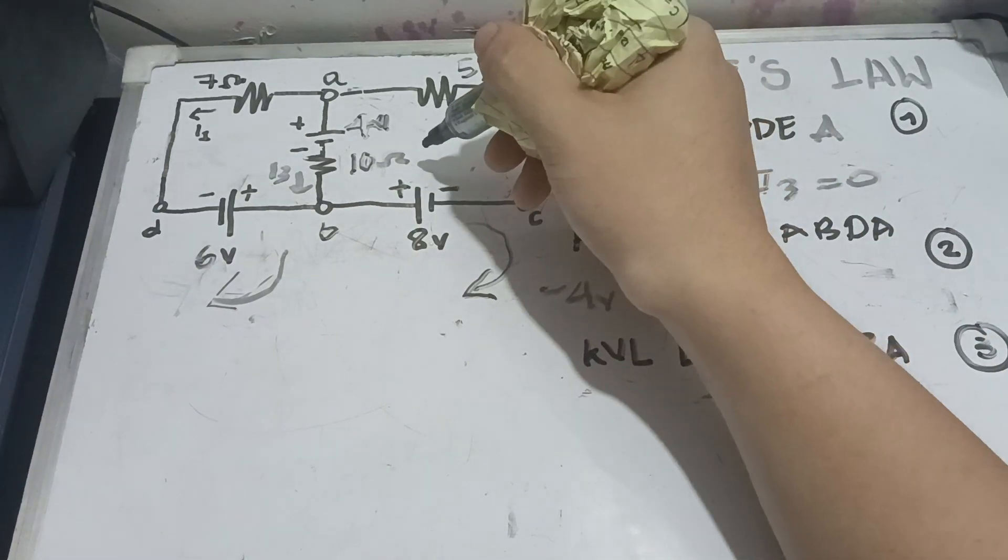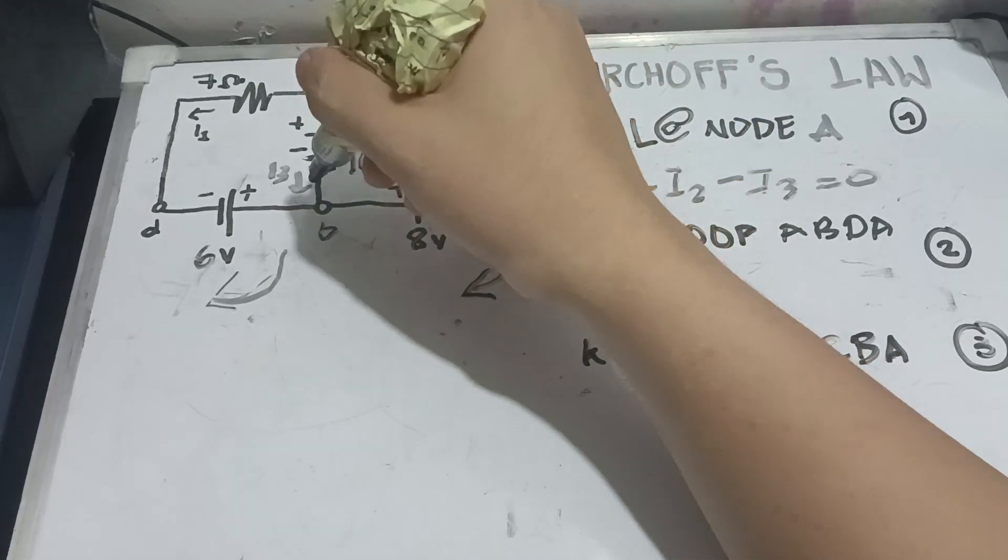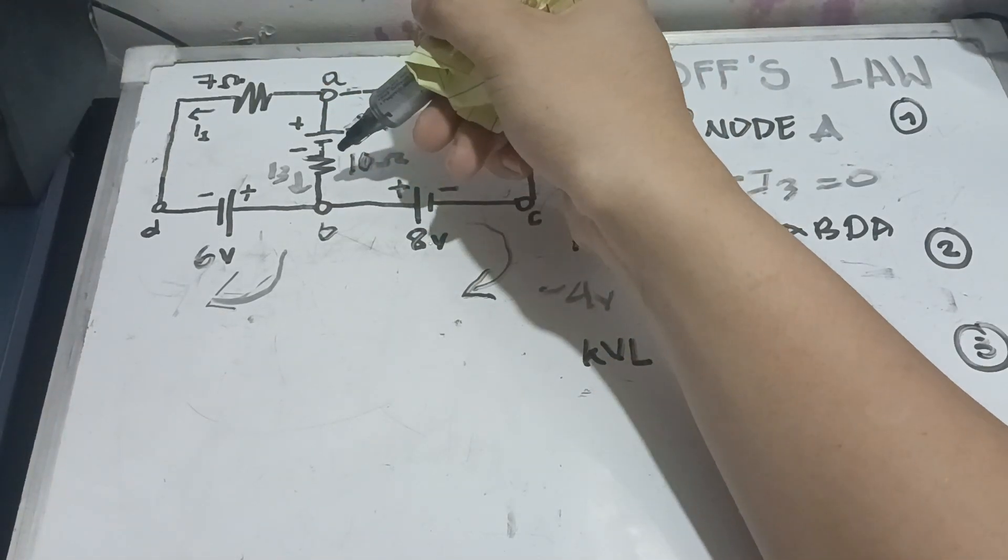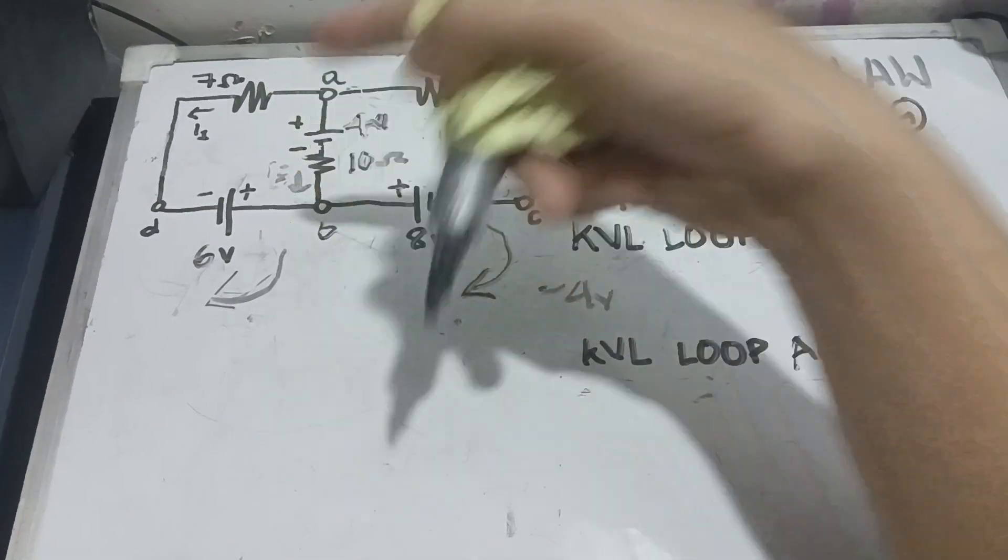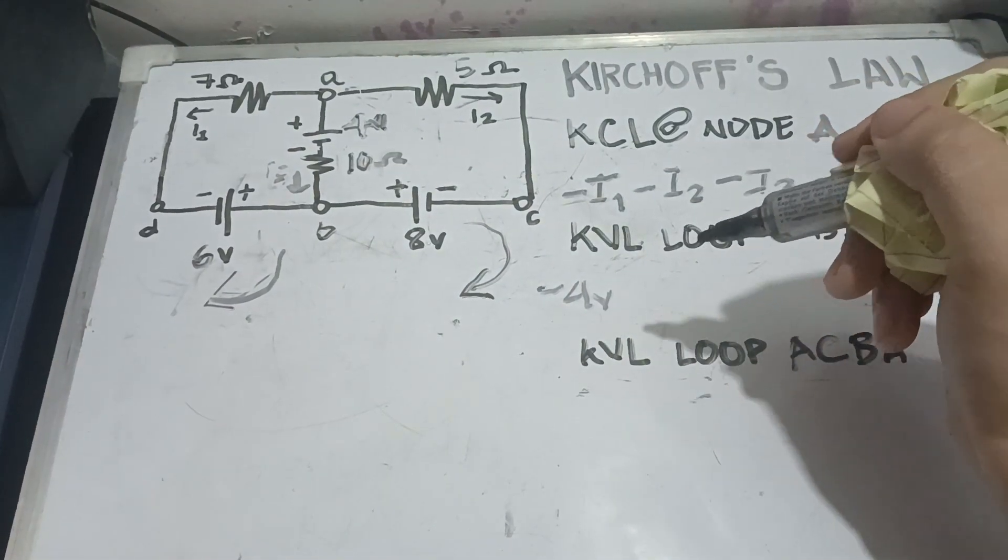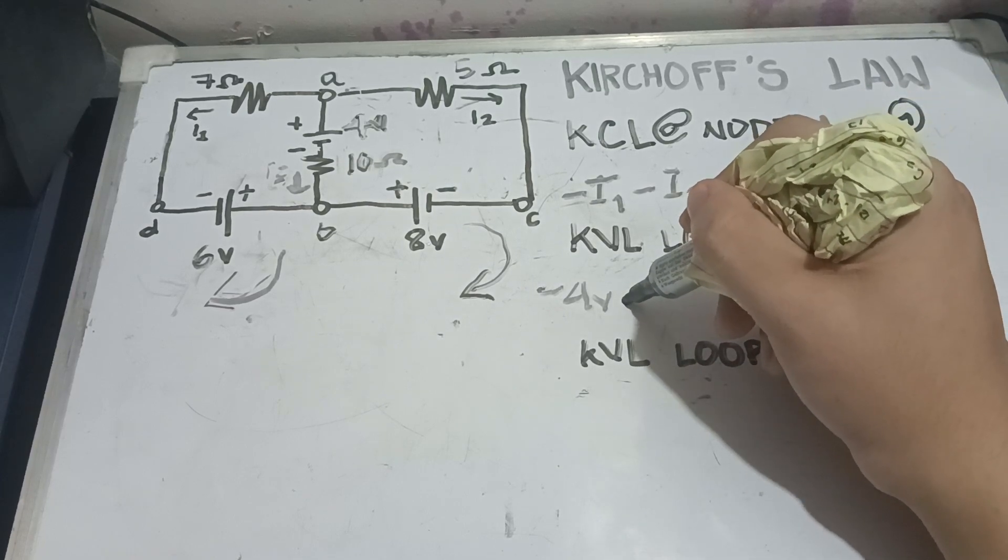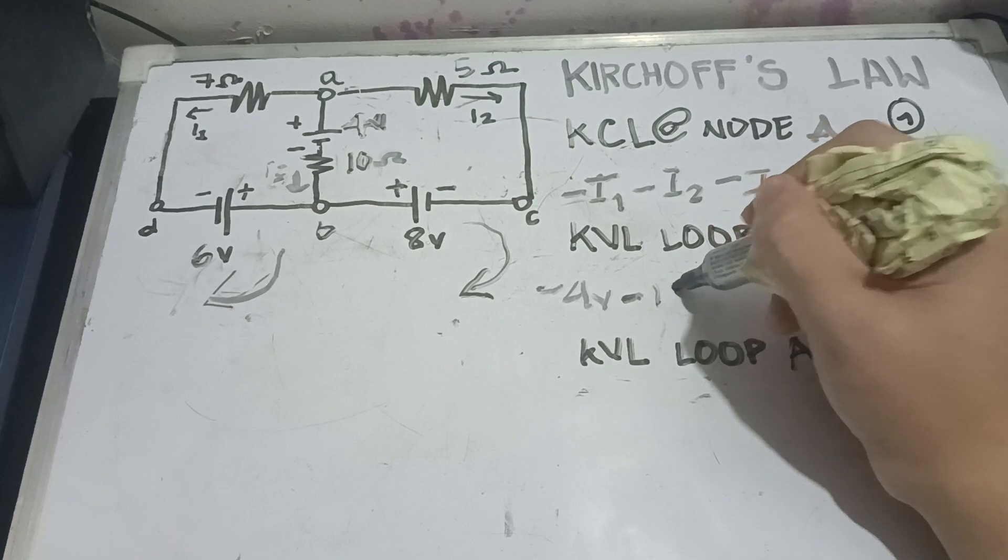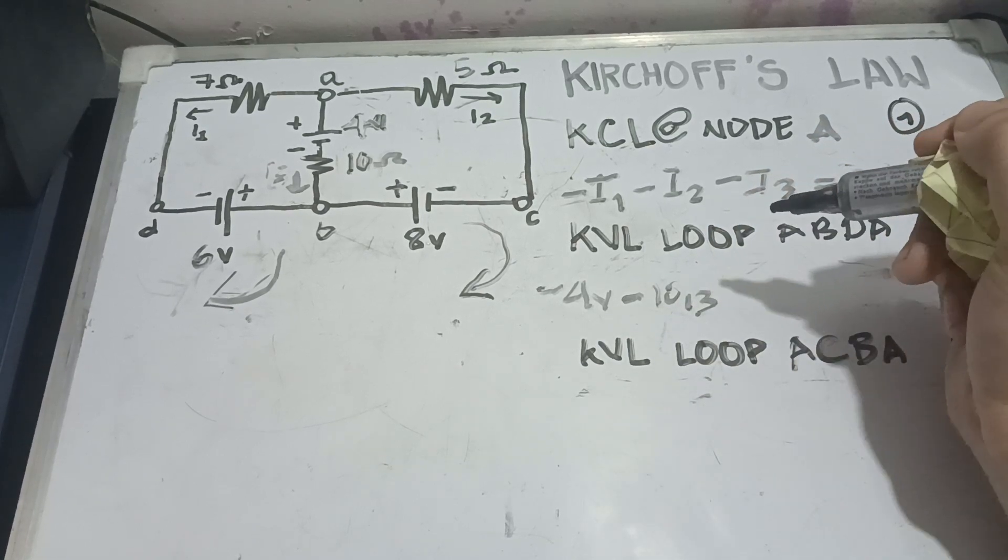Next, we have here our 10 ohms resistor and it has the same direction as our I3. It means that if we are going in the same way, it's going to be negative. So, it's going to be negative 10 I3.